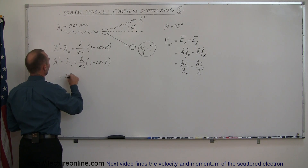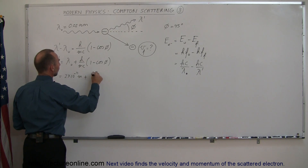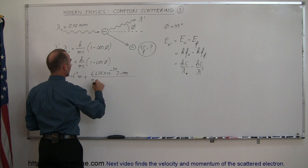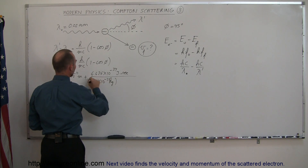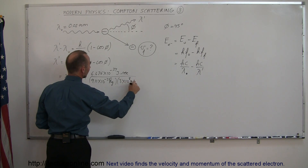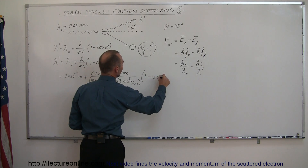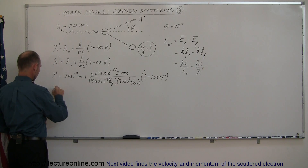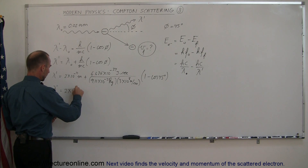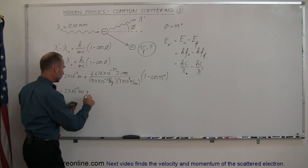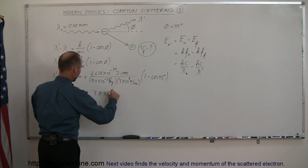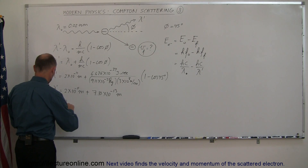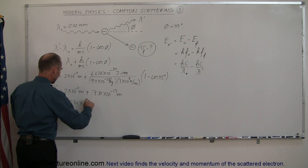Plugging in the numbers: lambda prime equals 2×10⁻¹¹ meters plus h, which is 6.626×10⁻³⁴ joule·seconds, divided by the mass of an electron, 9.11×10⁻³¹ kilograms, multiplied by the speed of light, 3×10⁸ meters per second, times 1 minus the cosine of 45 degrees, which is 0.707. That gives a shift of 7.10×10⁻¹³ meters, so the new wavelength is 2.071×10⁻¹¹ meters.